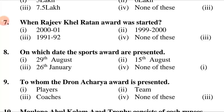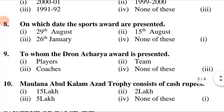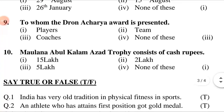On which date are the sports awards presented? First option: 29th August. Second option: 15th August. Third option: 26th January. Fourth option: none of these. The answer is 1st option, 29th August. To whom is the Dronacharya Award presented? First option: players. Second option: team. Third option: coaches. Fourth option: none of these. The answer is 3rd option, coaches.